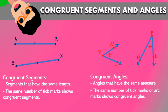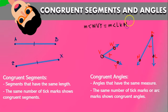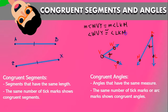We're also going to talk about congruent angles. Congruent angles are angles that have the same measure. The same number of tick marks or arc marks shows that two angles are congruent. So the measurement of angle WVY is the same as the measurement of angle MQL or LQM, because they share the same arc marks. If two angles are congruent, their measurements are equal.